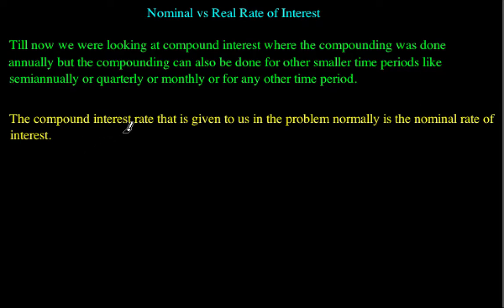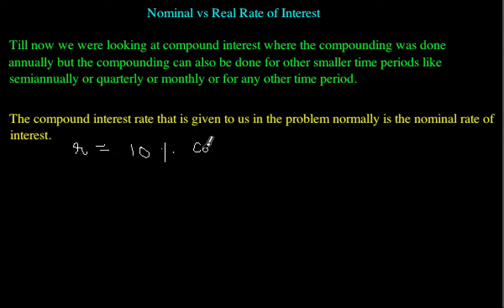The compound interest rate given to us in a problem is normally the nominal rate of interest. For example, if we are given that the compound rate of interest is 10% per annum, compounded quarterly.